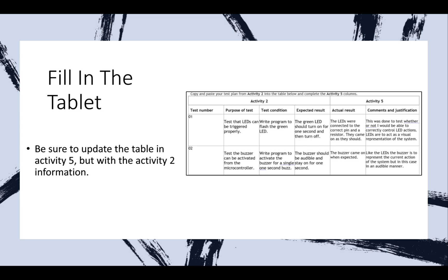Next is filling the table. On the left-hand side where it says Activity 2, this is the stuff you did from Activity 2 — nothing here should be vastly different. The only new pieces of information are actual results, comments, and justifications. Actual results simply means what actually happened when you tested it. For example, I tested whether LEDs can be triggered properly — I wrote code to simply turn the LEDs on and off to make sure I can control them from the Raspberry Pi Pico and haven't burnt them out. The actual result: did the LEDs turn on? If not, why, and how did you fix it?